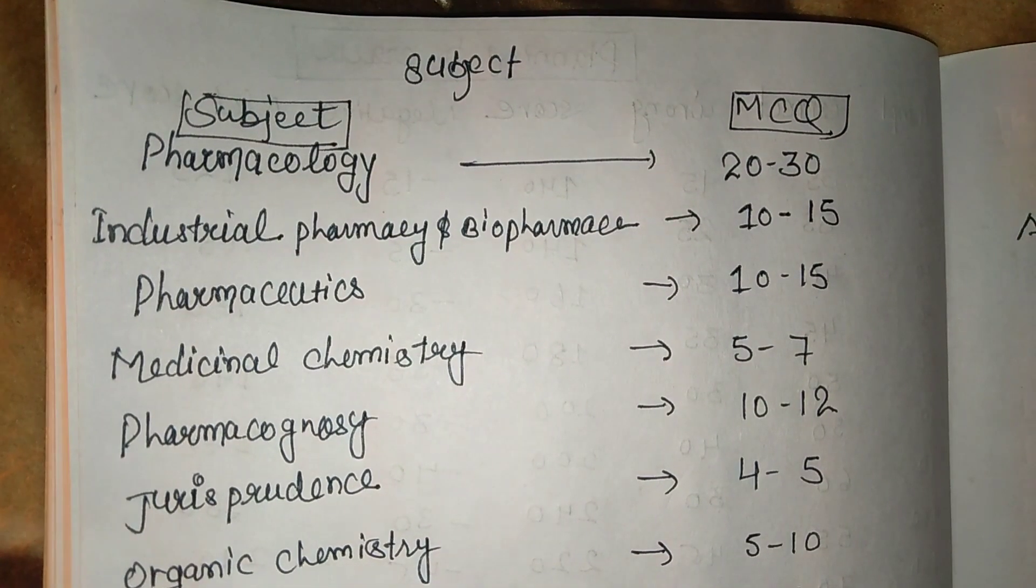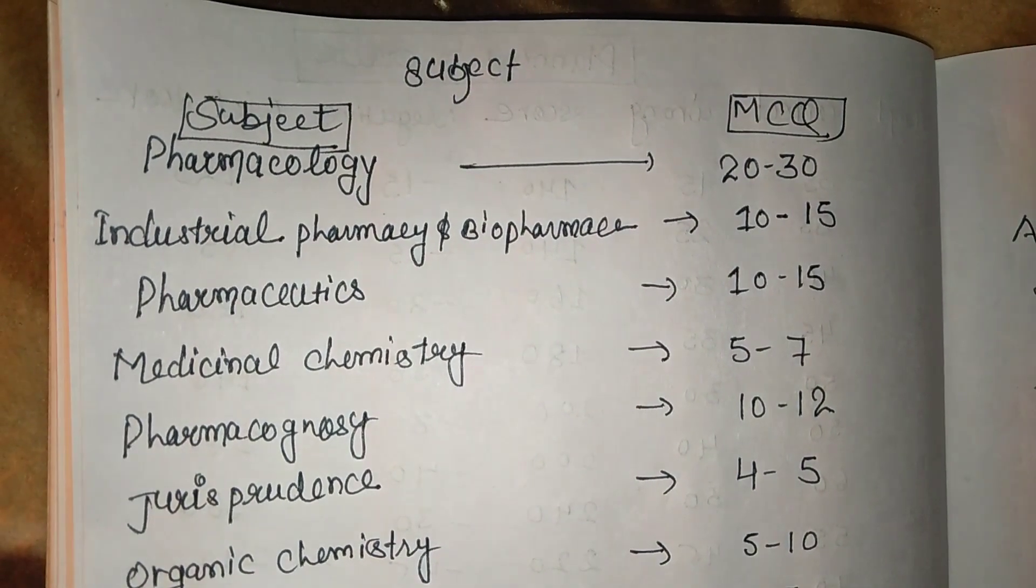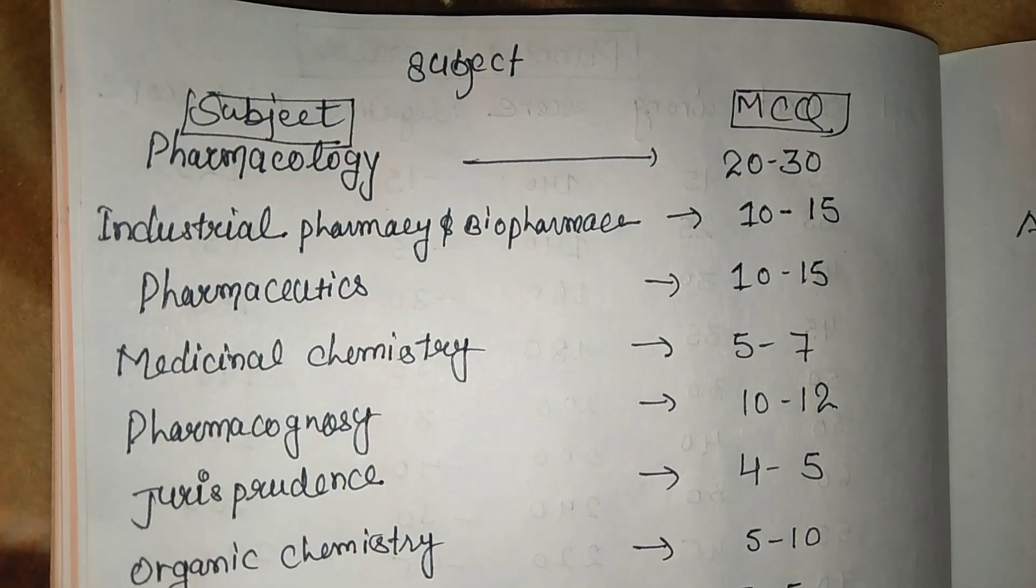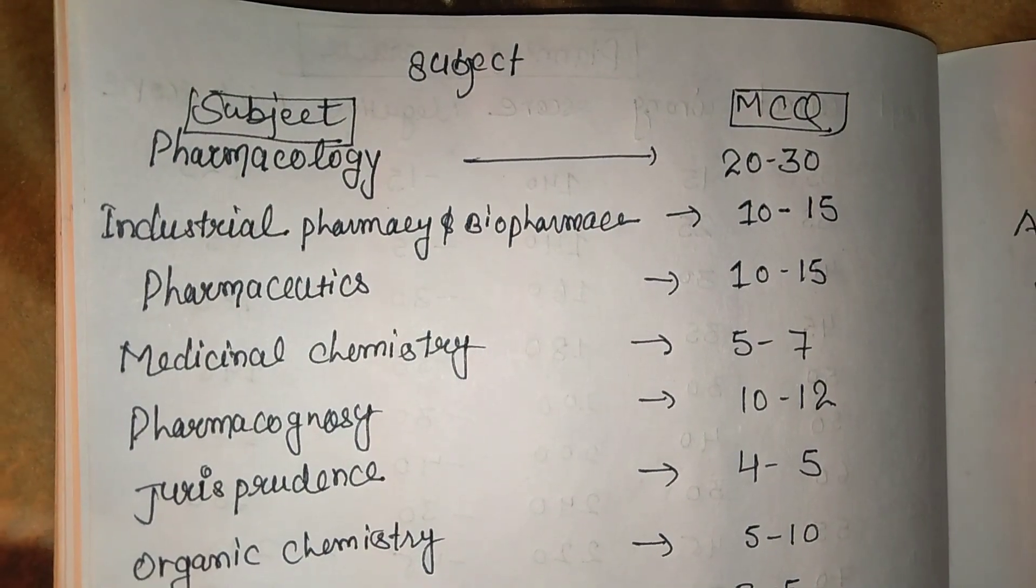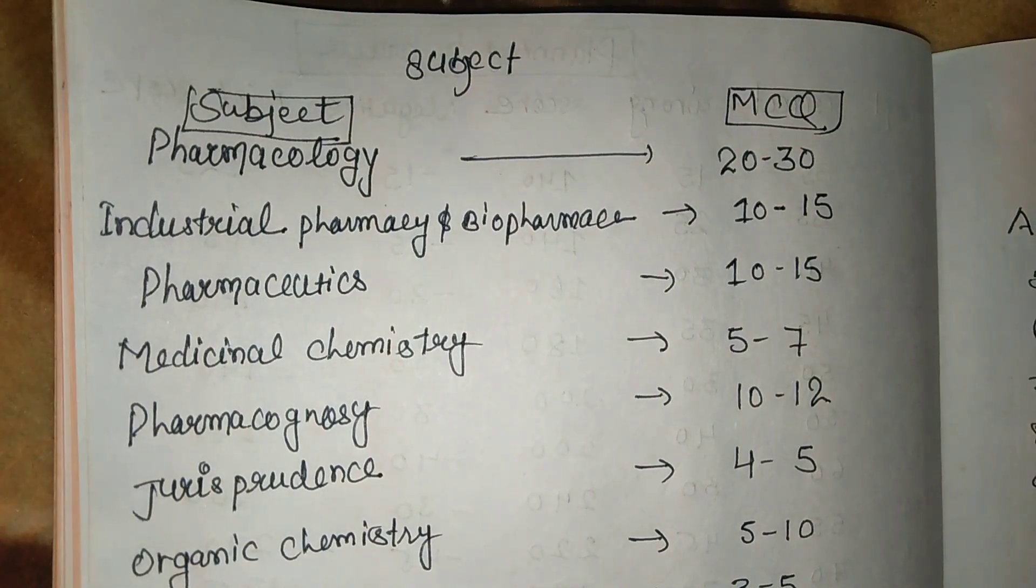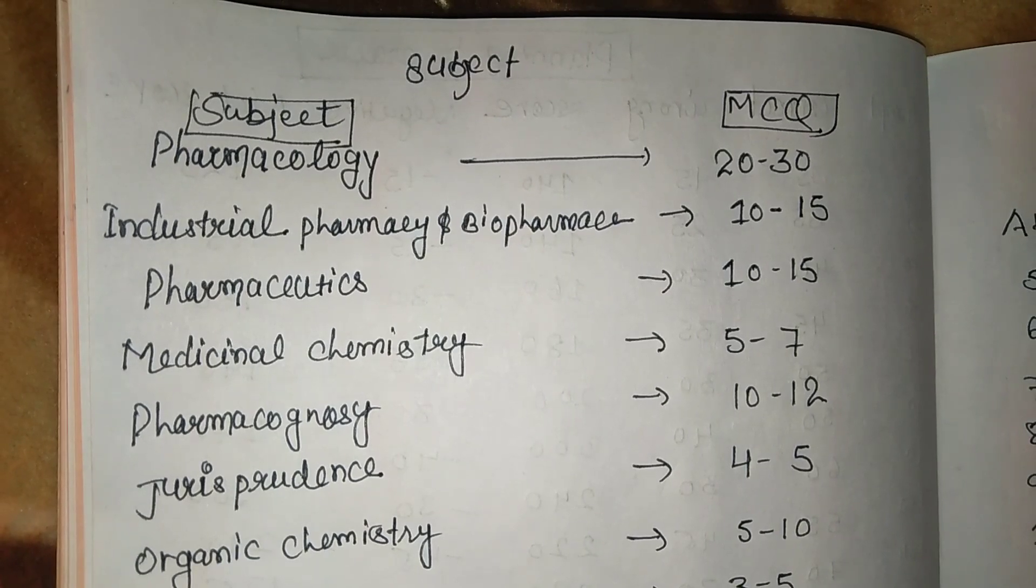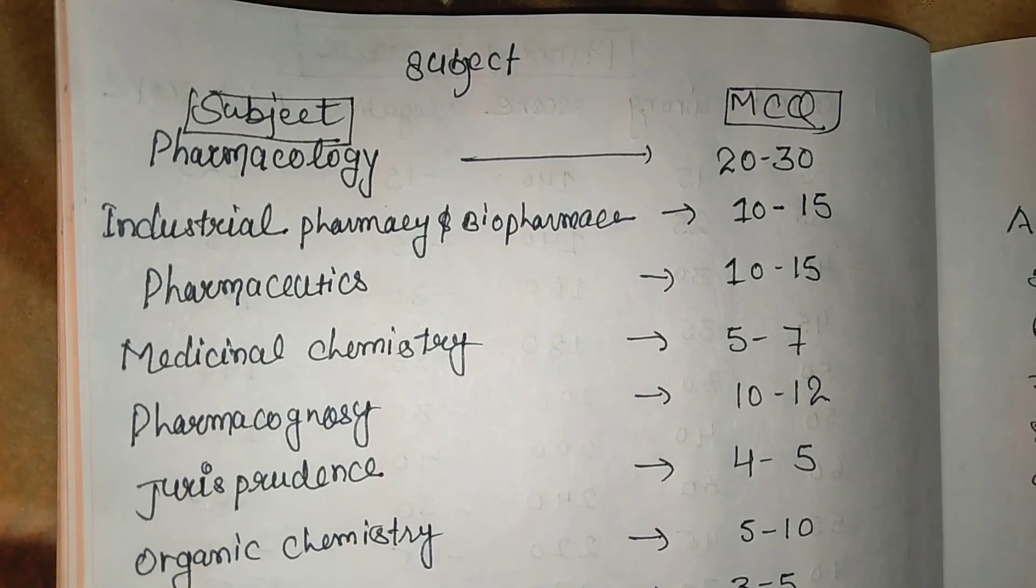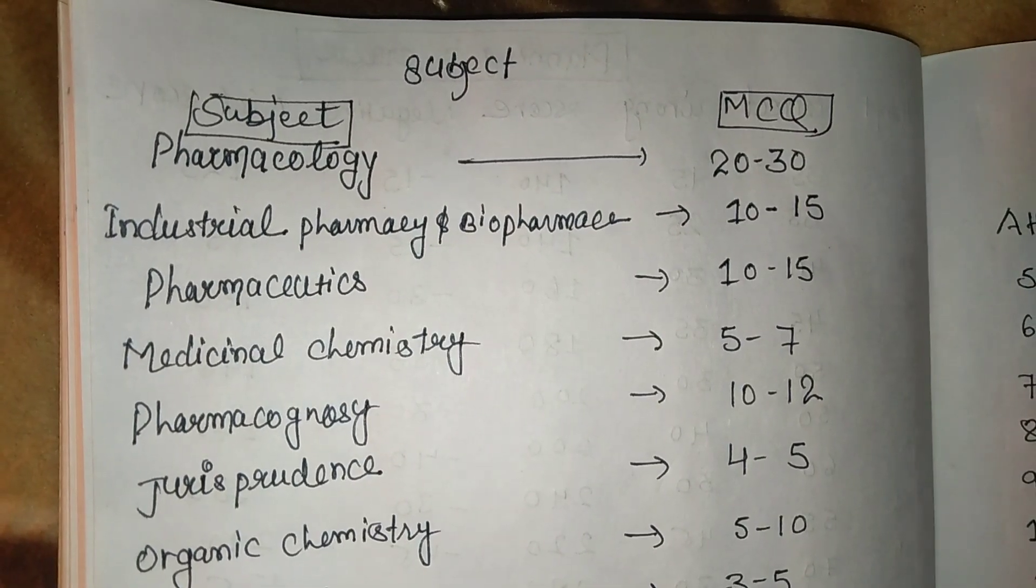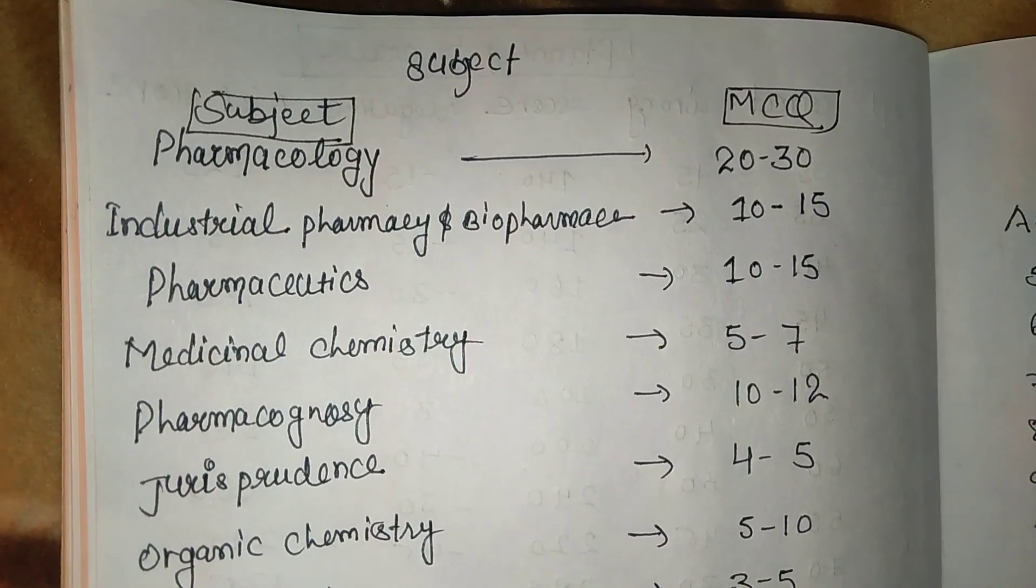So guys, welcome back to my channel, Tyagi Bandhu. This is actually the strategy for GPAT 2020. Please read this carefully - how many MCQs arise from which subject. First of all, pharmacology: 20 to 30 MCQs. Next is industrial pharmacy and biopharmaceutics: 10 to 15 MCQs. Pharmaceutics: 10 to 15 MCQs. Medicinal chemistry: